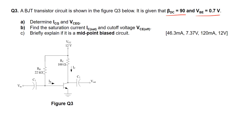To start, we have to remove C1 and C2 from the circuit because ICQ and VCEQ are DC parameters. We then analyze that the current IB originates from VCC, and IB travels through the BE junction before going to ground. This gives us the KVL loop we will use to calculate IB.